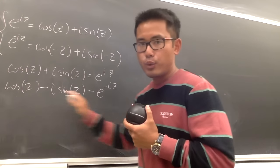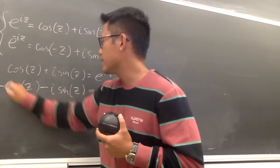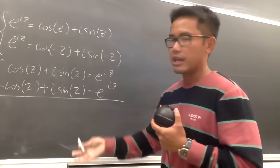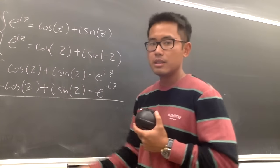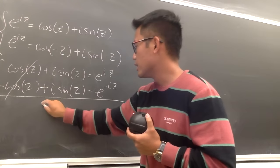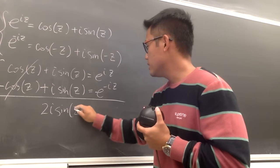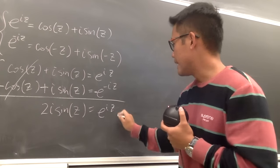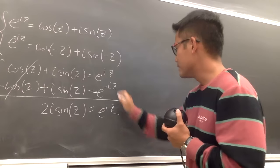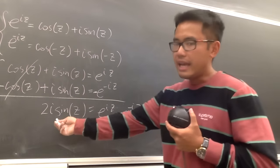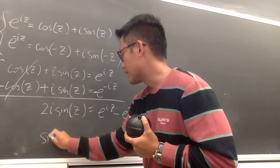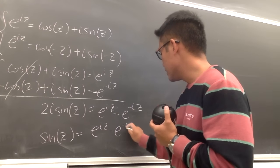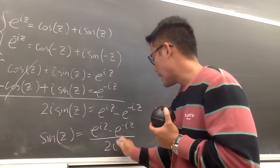Now I'll multiply the second equation by negative one to flip the signs, then add the two equations together. The cosine terms cancel, leaving 2i sine z equals e to the iz minus e to the negative iz. Dividing both sides by 2i gives: sine z equals (e to the iz minus e to the negative iz) all over 2i.